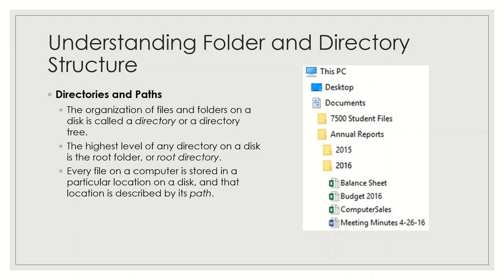Let us check the directory structure. The picture shows the Documents library with two folders: one called 7500 Student Files and another called Annual Reports. The Annual Reports folder contains two subfolders, one called 2015 and one called 2016. Stored within the 2016 folder are four files: Balance Sheet, Budget 2016, Computer Sales, and Meeting Minutes. If you were to verbally describe how to find the Balance Sheet file, you would say go to Documents, then Annual Reports, then the Balance Sheet document is inside the 2016 folder. In path notation, it would appear as: Documents\Annual Reports\2016\Balance Sheet.